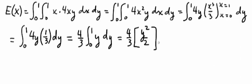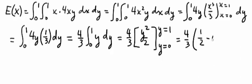Evaluating that y is 0 and y is 1, we end up getting 4 thirds times 1 half minus 0, which just becomes 2 thirds. So the expected value of x is 2 thirds.